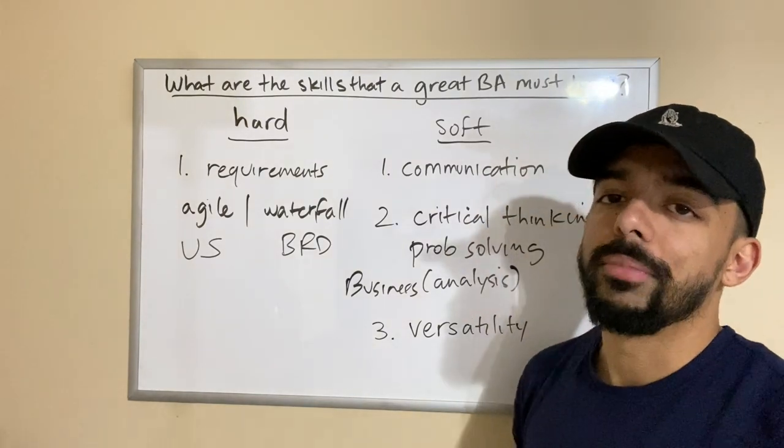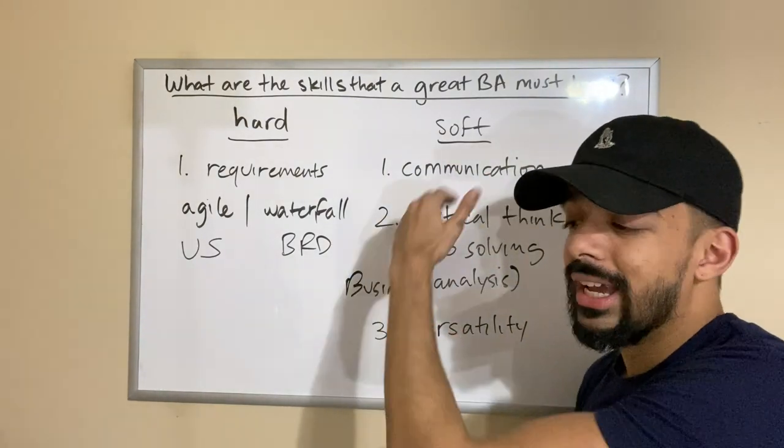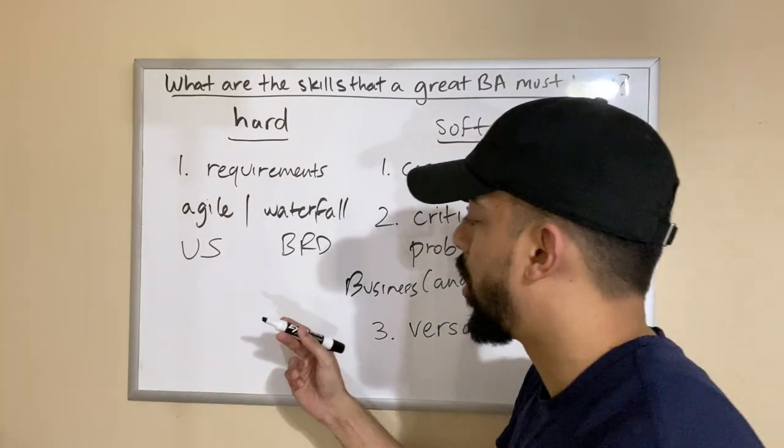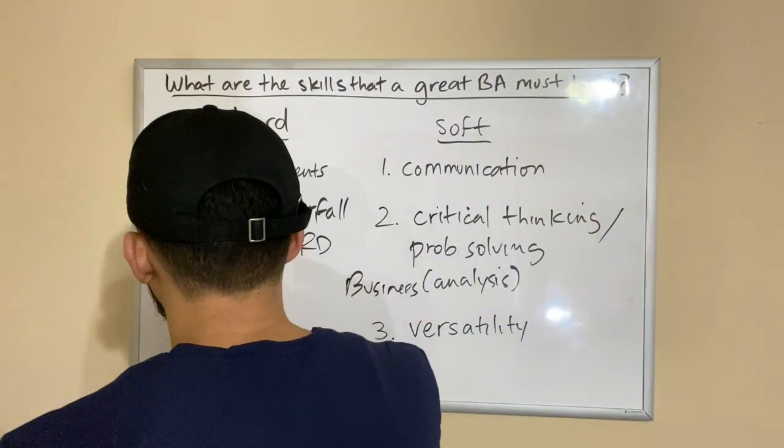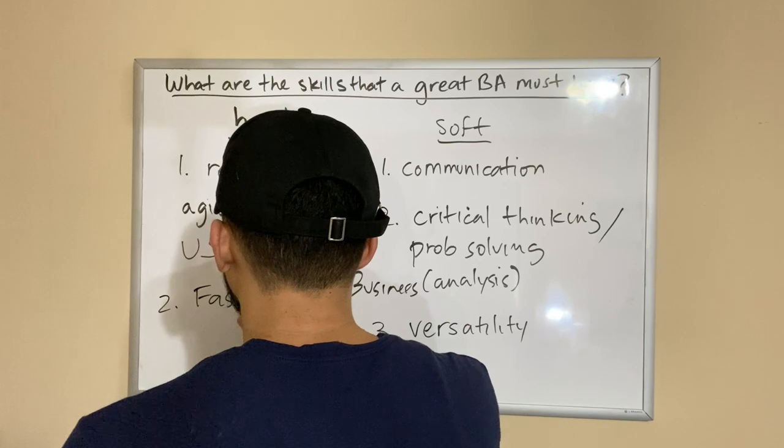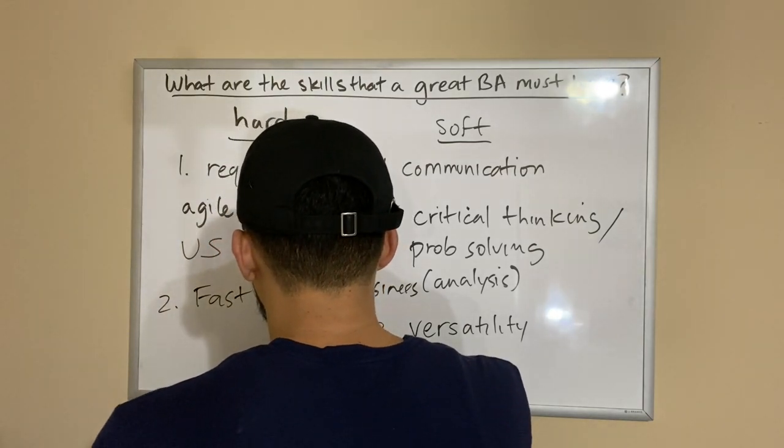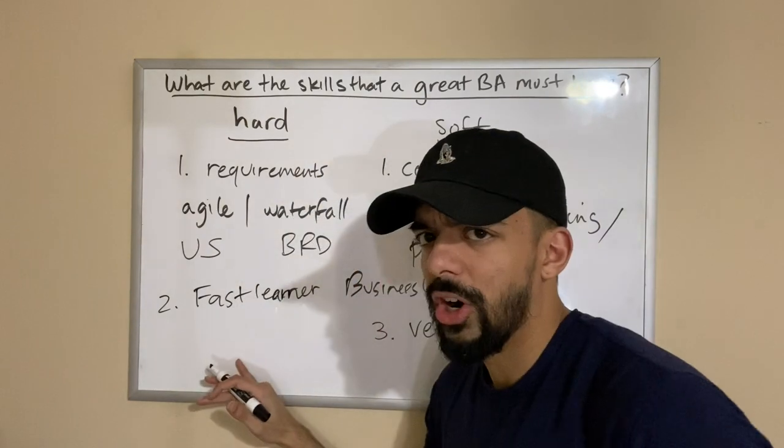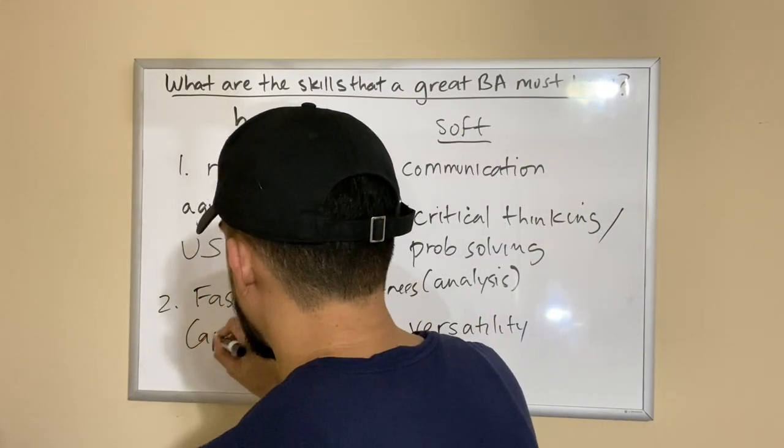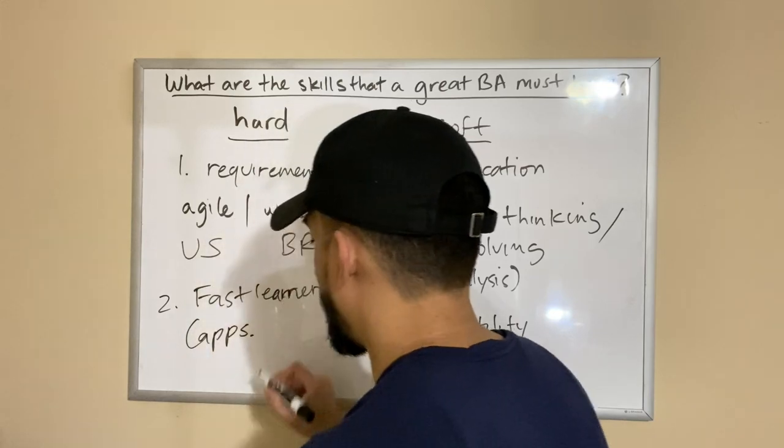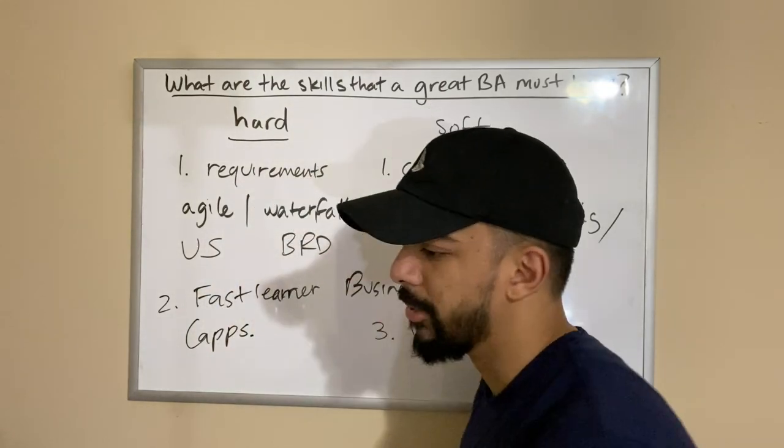Versatility very important but again obviously lower on the totem pole than the other two. And finally let's go back to the hard skills real quick here and I'm just gonna say you got to be a fast learner. And I know this might seem like a soft skill but it is a hard skill. Here's the thing when I say fast learner you know you got to be able to learn apps, you got to be able to know different documents.